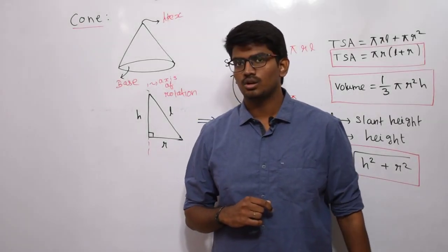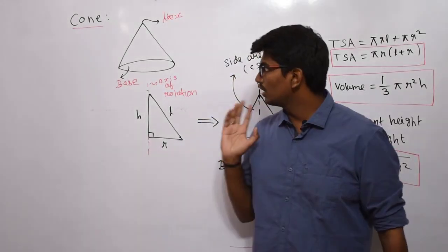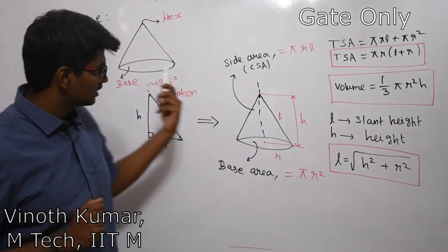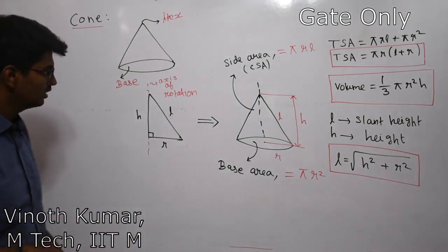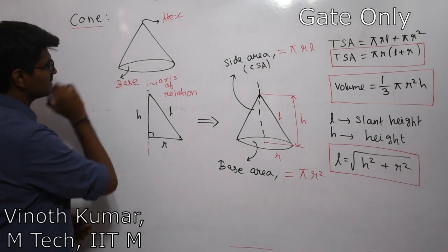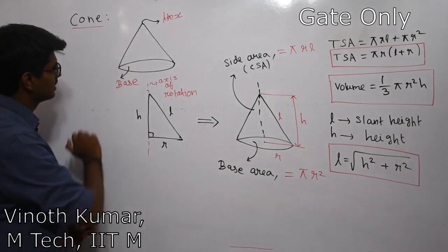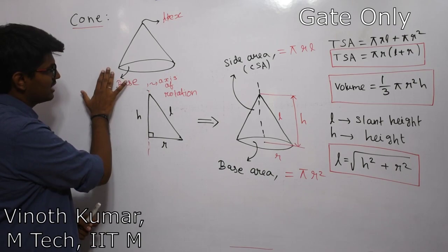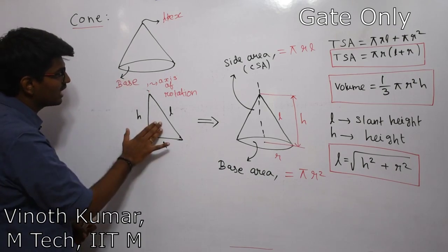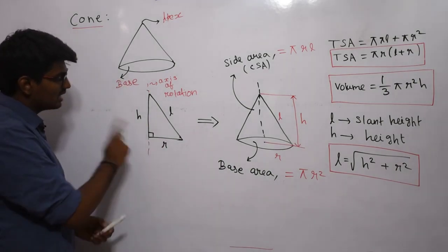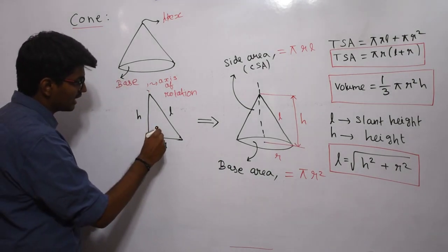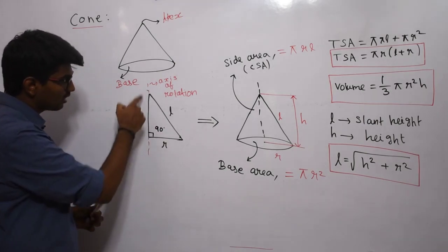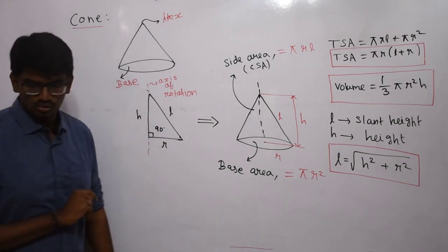We will continue our next topic on this basic video lecture. The next thing we are going to discuss is cone. Cone is a very simple structure, a three-dimensional shape which we obtain by rotating a right angle triangle. If I rotate a right angle triangle about one of its axes, we will be getting a cone.